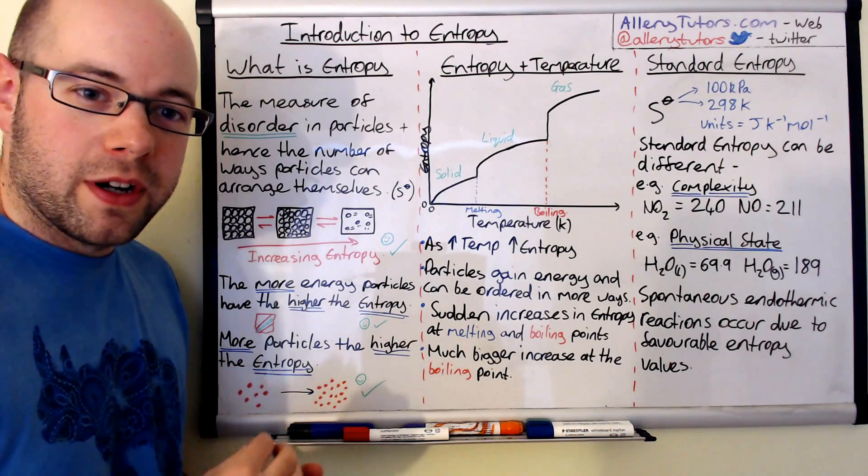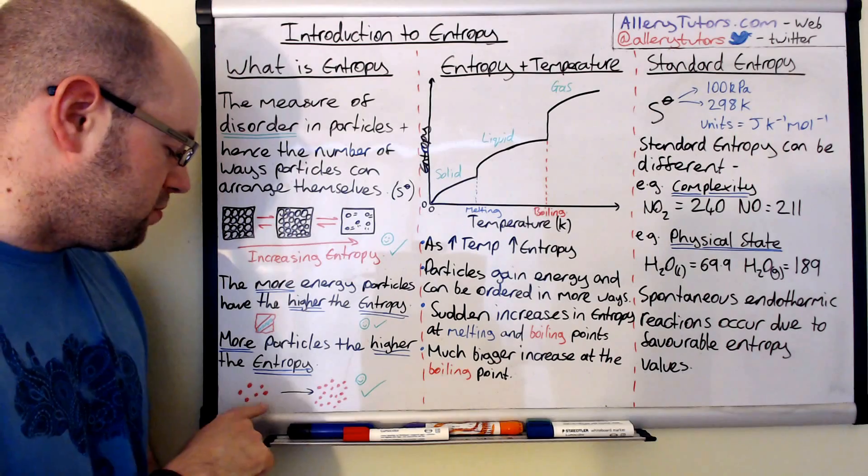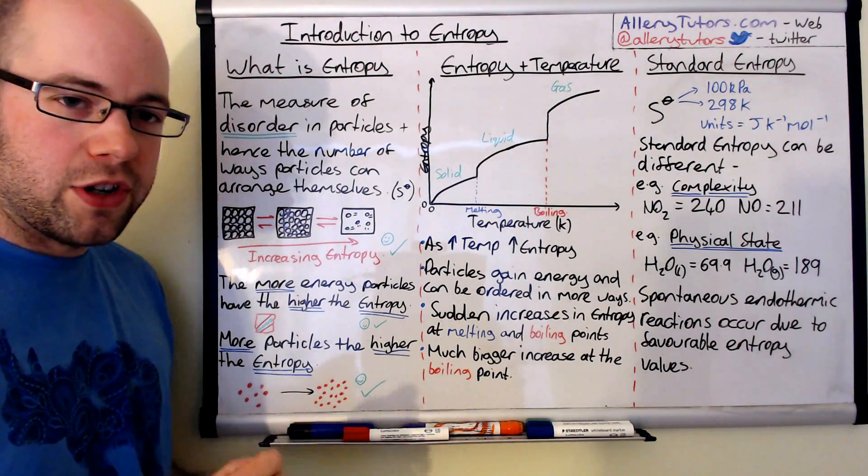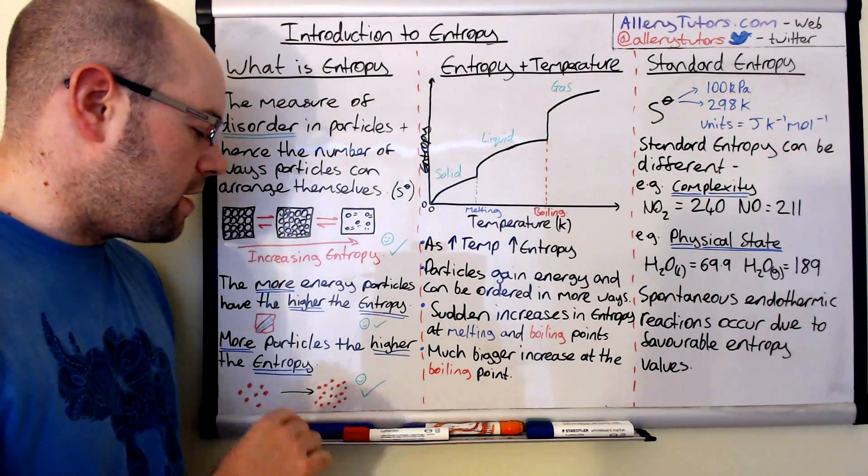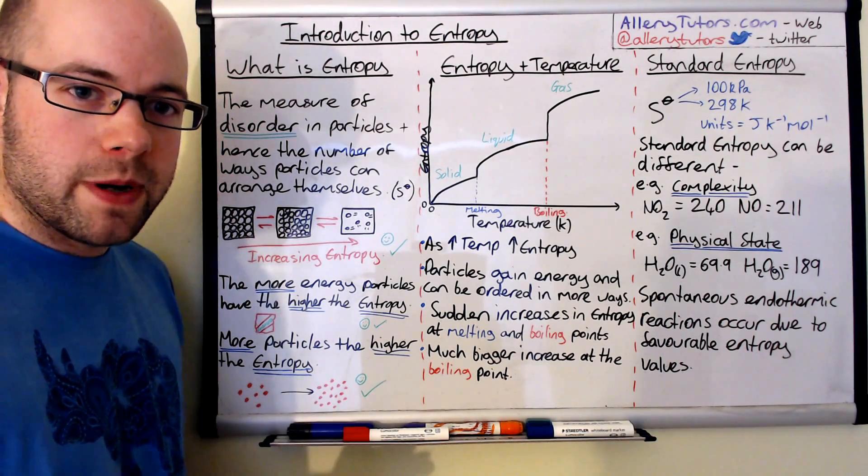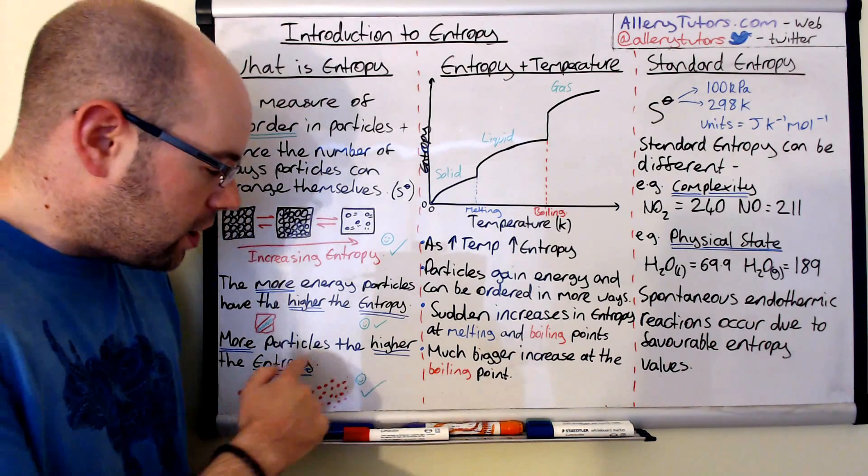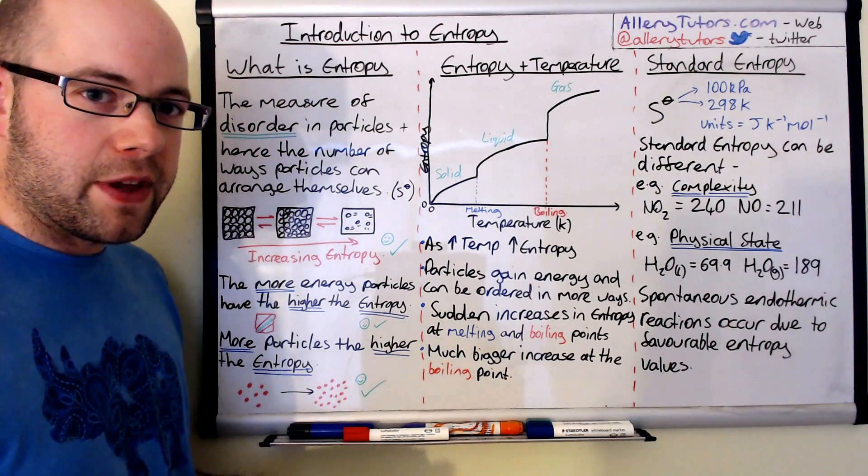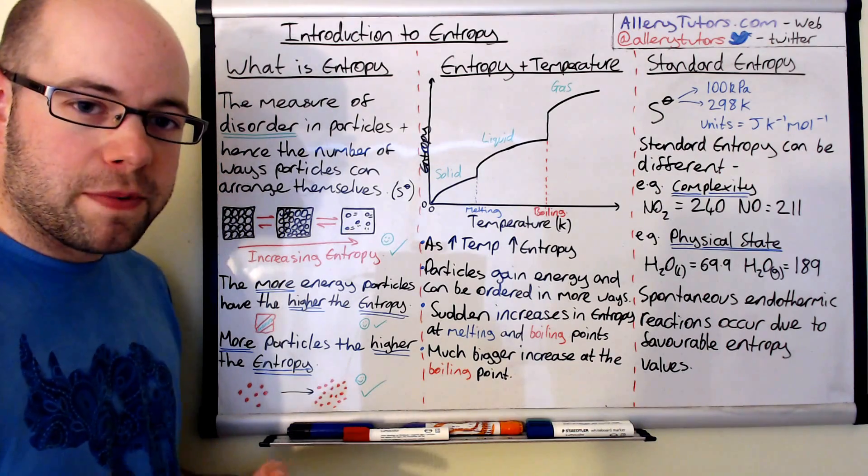The other one is the more particles we have, the more entropy we have. If we start with a reaction with only a handful of particles and after the reaction we have loads more particles, in other words more moles, then we have increased entropy. The reason is because we have more ways of arranging lots of particles than just a handful. Because we have that greater freedom to arrange the particles, entropy has increased.